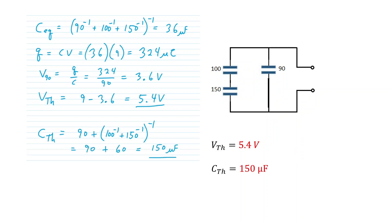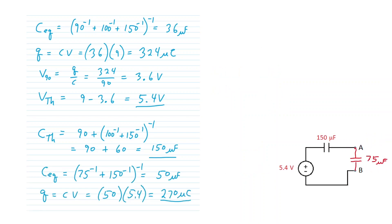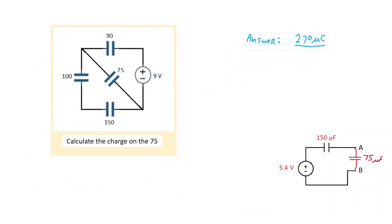For the Thevenin capacitance, we short circuit the constant voltage source and consider the equivalent capacitance at the output points. The 90 is in parallel with the combination of 100 in series with 150. The series combination of 100 and 150 gives 60 microfarads, and adding the 90 in parallel: 90 plus 60 gives 150 microfarad Thevenin capacitance. Bringing in the Thevenin equivalent circuit and connecting the output — 75 microfarads — we have a simple series loop. The equivalent capacitance of 75 and 150 is 50 microfarads, and the charge CV: 50 microfarads times 5.4 volts gives 270 microcoulombs on the 75 microfarad capacitor.